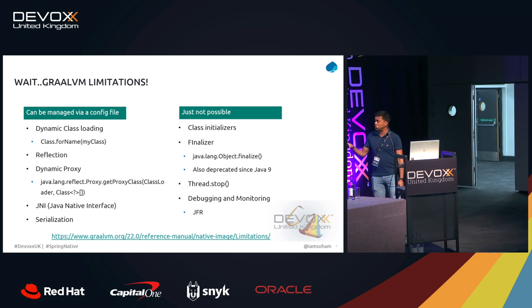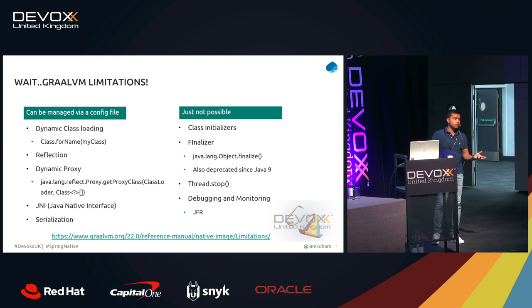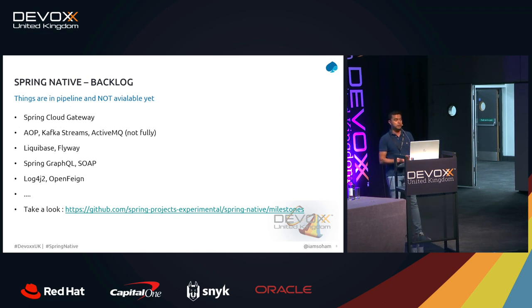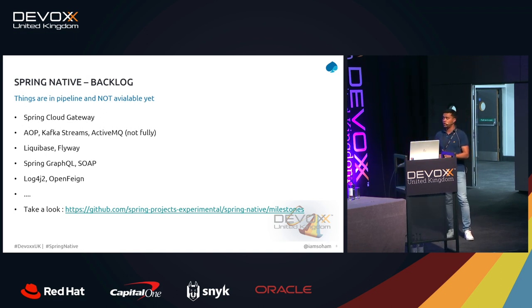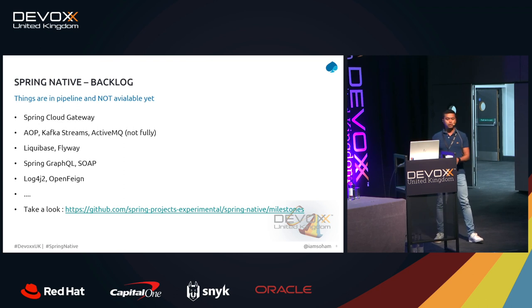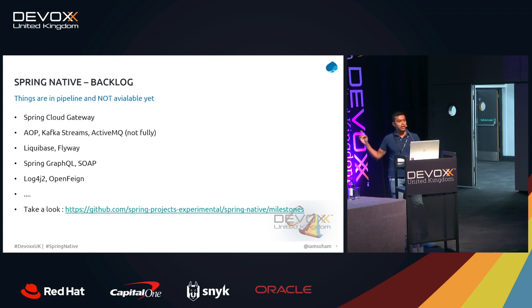But there are things that are not possible at all, like debugging and monitoring. That's quite an important part of our application. When you use JFR, you don't have that ability in GraalVM at all. You should also look at their backlog — there are a lot of things not yet possible with Spring Boot applications running on GraalVM. You cannot do Spring Cloud Gateway, only limited AOP, Kafka Streams, and ActiveMQ. You cannot do Liquibase or Flyway — so if you're managing your database operations with those, you cannot do that at all. You cannot do OpenFeign, which I'm a big fan of for communicating between two APIs. Please take a look at their milestones and which features are getting released when.